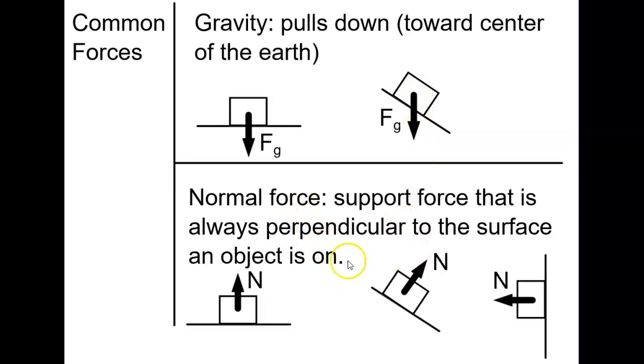Normal force is a support force for any flat surface. So it could be a table, a floor, a ramp, a wall, and it's always going to be perpendicular to whatever the surface is. So you can see on a flat surface like this it's pointing straight up. On a slanted surface it is perpendicular to the surface itself. On a wall it is perpendicular to the wall. So it's really important to note that normal force is always perpendicular to the surface.